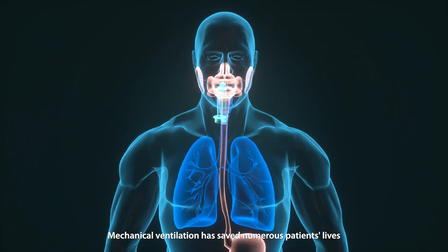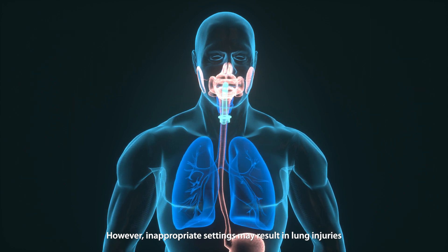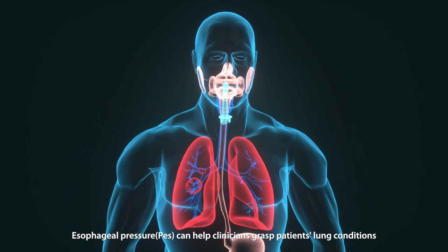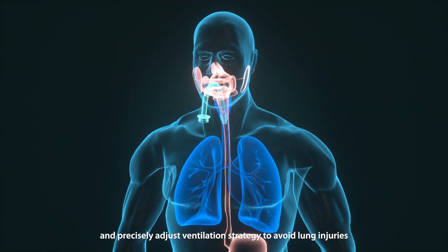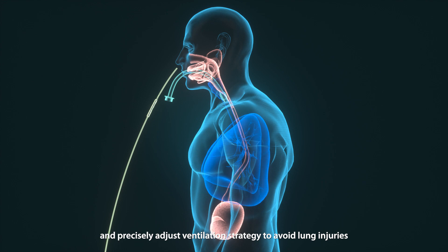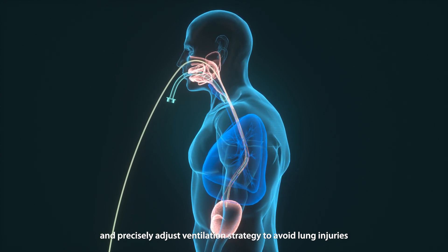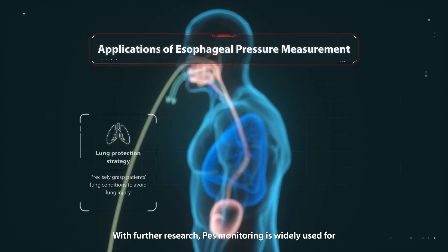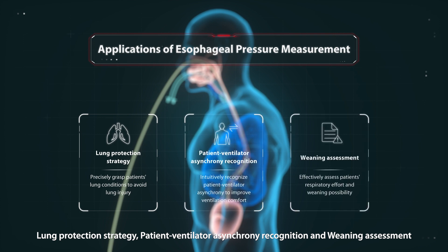Mechanical ventilation has saved numerous patients' lives. However, inappropriate settings may result in lung injuries. Esophageal pressure (PES) can help clinicians grasp patients' lung conditions and precisely adjust ventilation strategy to avoid lung injuries. With further research, PES monitoring is widely used for lung protection strategy, patient-ventilator asynchrony recognition, and weaning assessment.